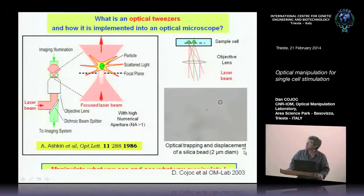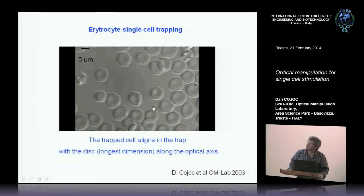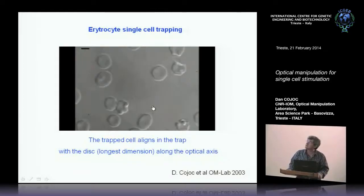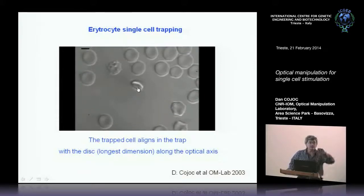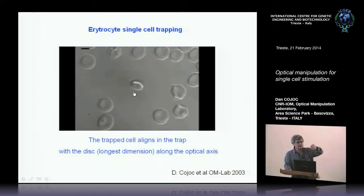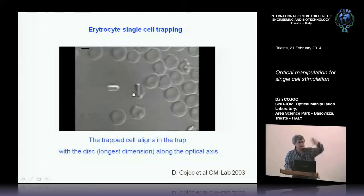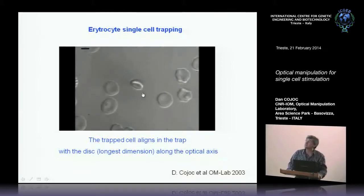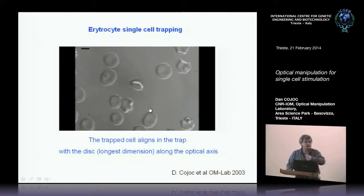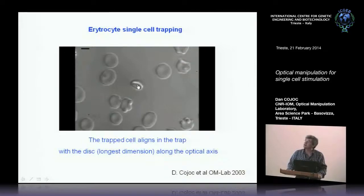Here is another example with erythrocytes. You see the erythrocyte is trapped and then rotated with a disc of larger size along the optical axis. Then you move the sample, but the trapped cell stays fixed — so you can change the relative position of this cell to the other cells.